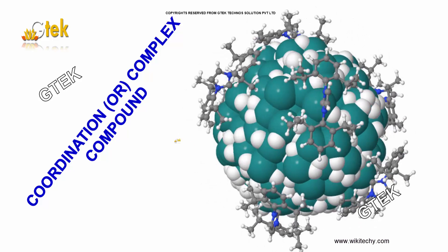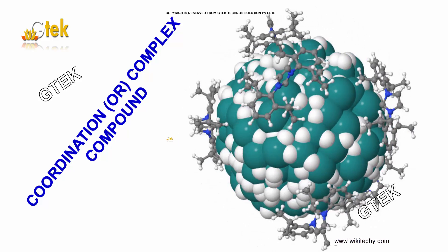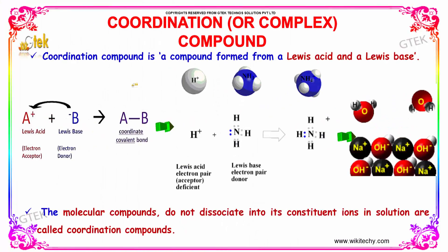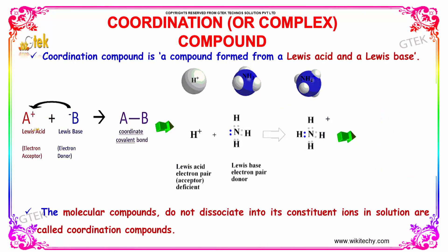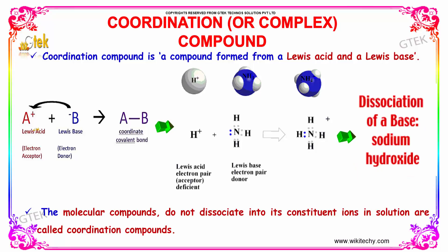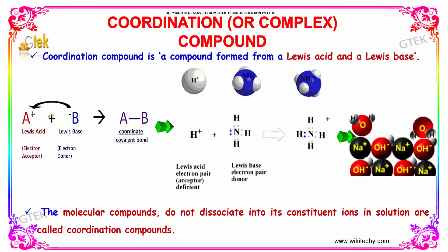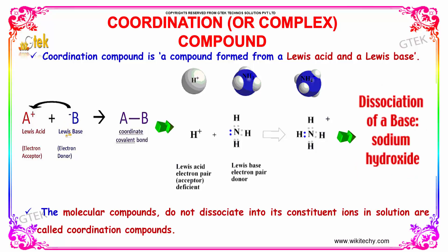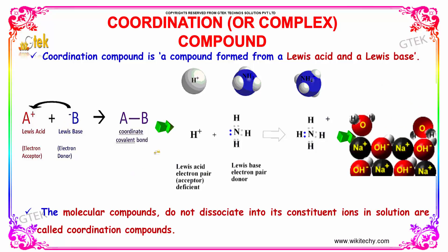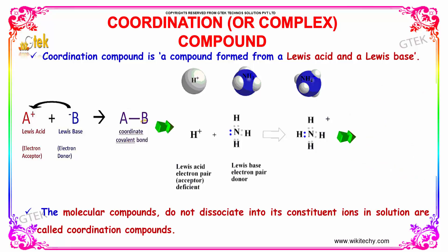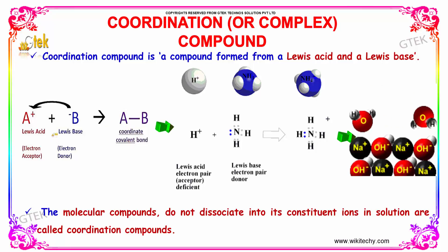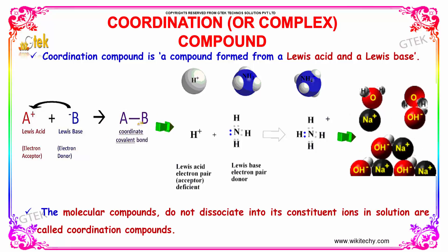Let's talk about the coordination or complex compound. A coordination compound is a compound formed from a Lewis acid, which is an electron acceptor, and a Lewis base, which is an electron donor. These molecular compounds do not dissociate into their constituent ions in solution, and they are called coordination compounds.